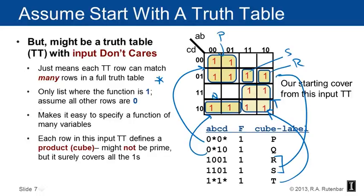Cube t turns out to be the bottom-right corner of the Karnaugh map. This compact representation makes it easy to specify a function with many variables — for example, a 25-variable function has 2^25 possible rows, but you only need to specify where the function is one, which is far fewer entries. Input don't cares make this very tidy and convenient.